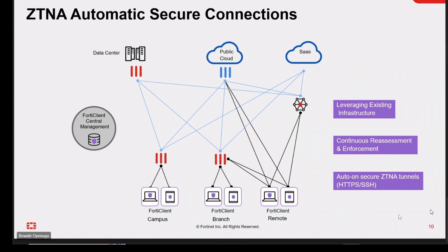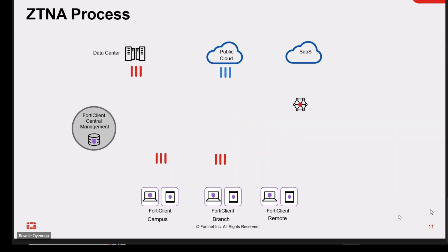The Universal ZTNA architecture is scalable to meet the needs of organizations of all sizes. As customers expand with more users or staff, it can easily scale to accommodate large numbers. The ease of deployment is also very important — the Universal ZTNA architecture is easy to deploy and manage, making it a good choice for organizations that do not have a lot of IT resources.